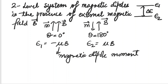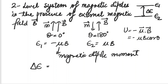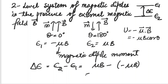We know the expression for energy is minus mu dot B, which is minus mu B cos theta. If we put theta equal to zero, our energy comes out to be minus mu B, which is E1. When we put 180 degrees, the minus signs cancel so E2 becomes plus mu B. Therefore delta E equals E2 minus E1, which is mu B minus (minus mu B), giving us 2 mu B.